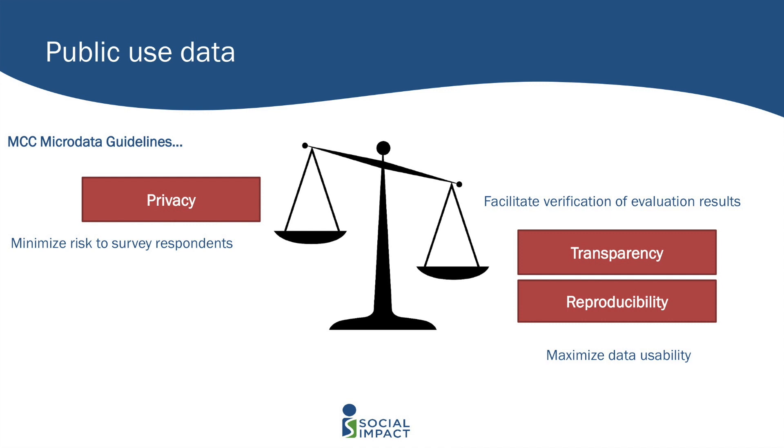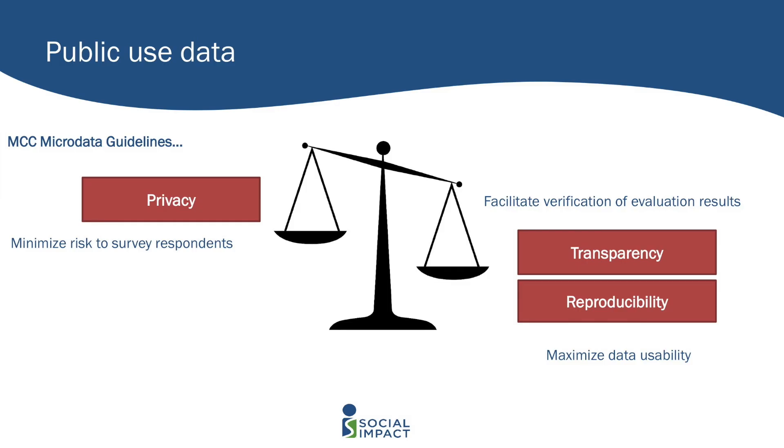This is the balance we're trying to achieve: protecting privacy and promoting transparency and reproducibility. As more donors get on board with these ideas, they're coming up with their own policies and guidelines. Using one example from Millennium Challenge Corporation microdata guidelines, their goal is to facilitate verification of evaluation results — think replicability — maximize data usability, and minimize the risk to survey respondents. And if there's a conflict between them, we're probably going to have to prioritize privacy because you do not want anyone to come to harm.